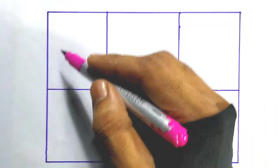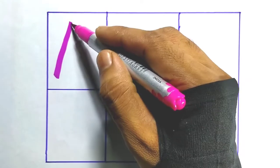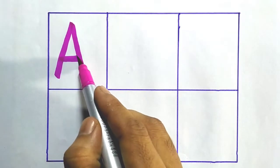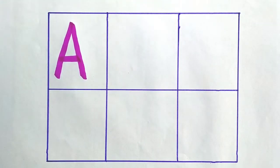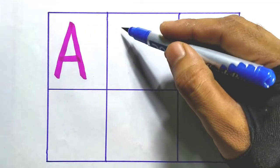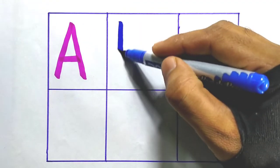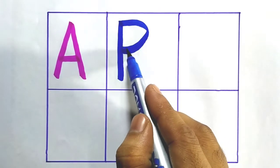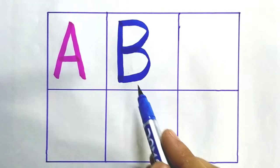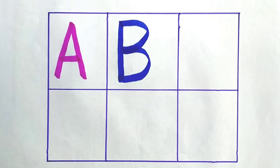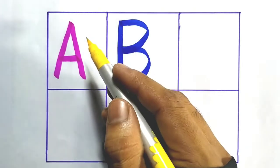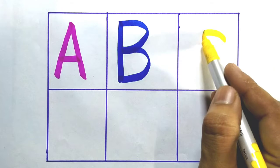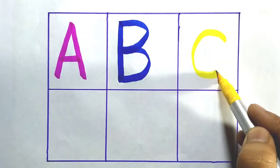Pink Color. A — A for Apple. A. Blue Color. B — B for Banana. Yellow Color. C — C for Camel.